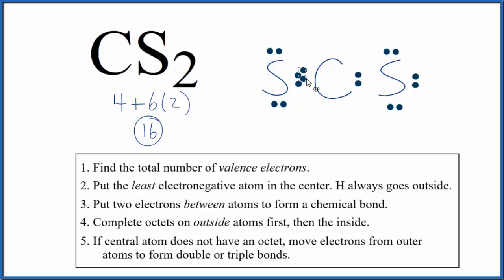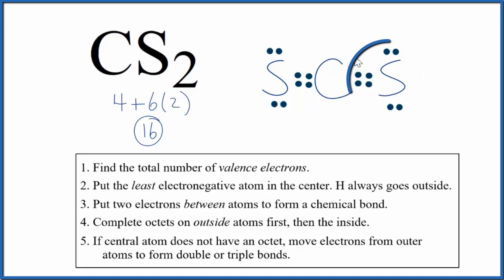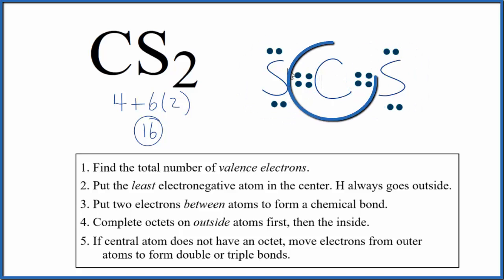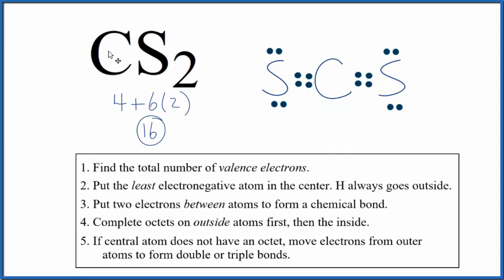We could move two electrons here — that way the sulfur would have eight, but now the carbon only has six. We're getting closer. So we move these two here to form another double bond. Now this sulfur has eight, this sulfur has eight, and the carbon has eight. And we're still using only 16 valence electrons for the CS2 Lewis structure.